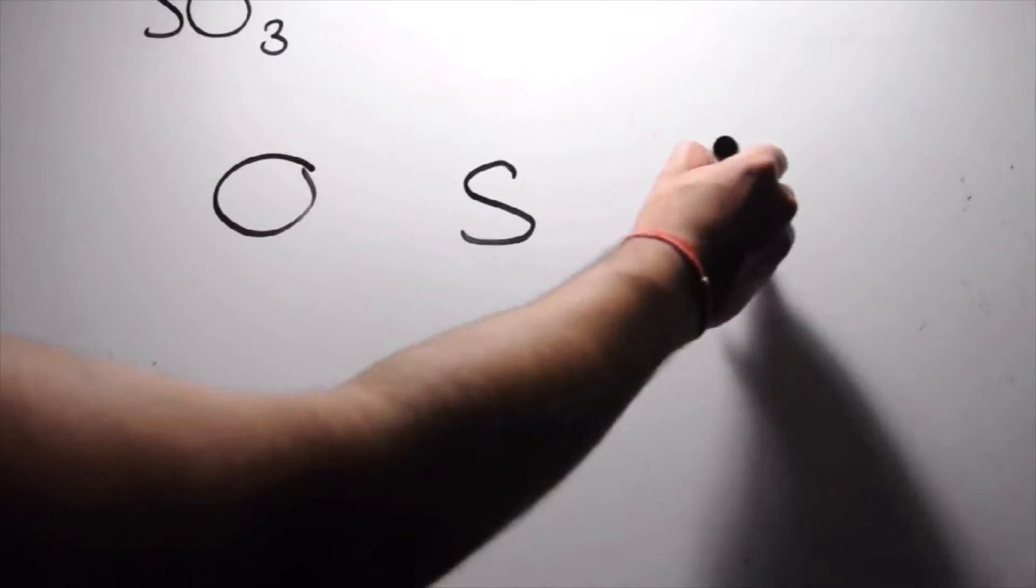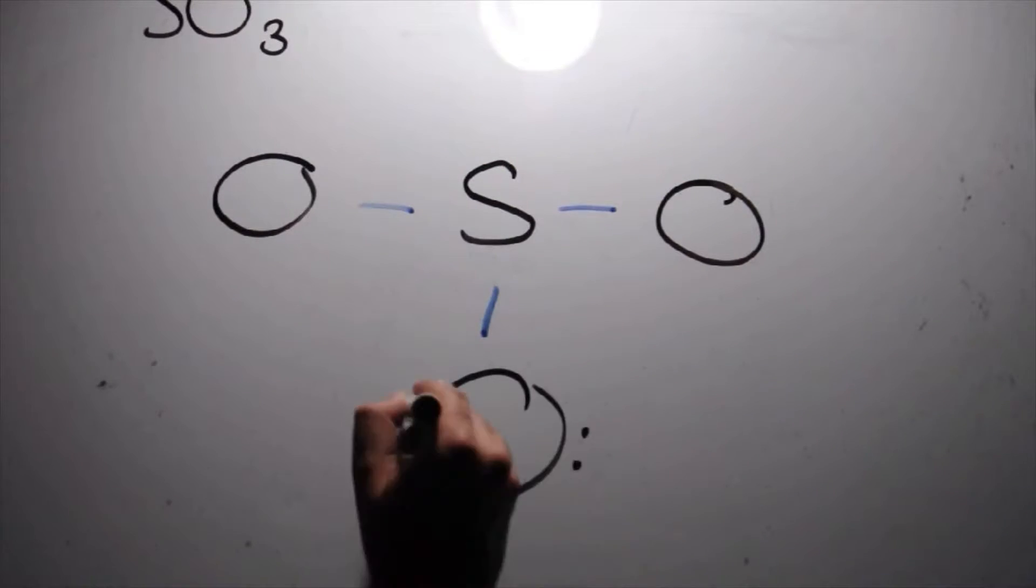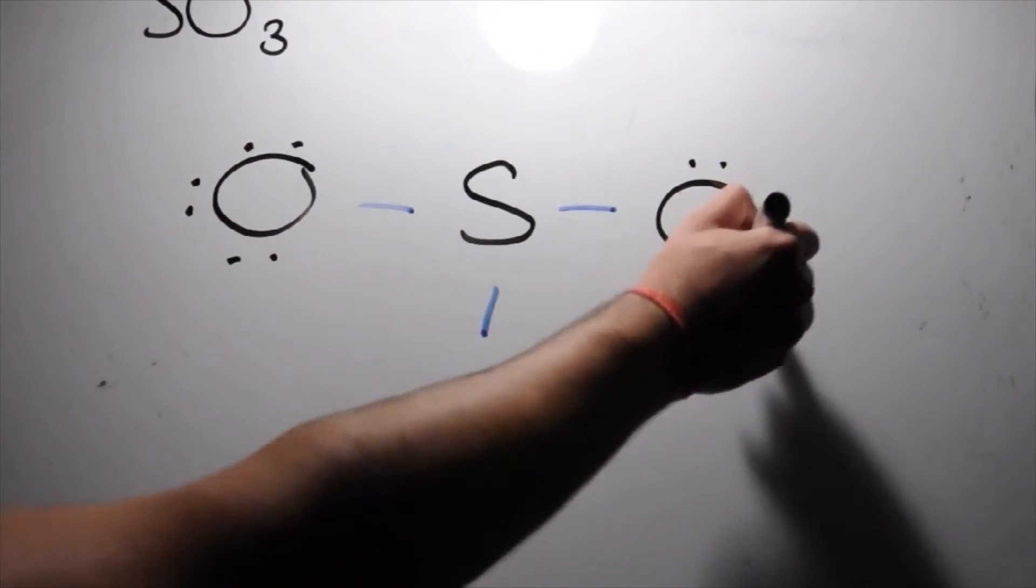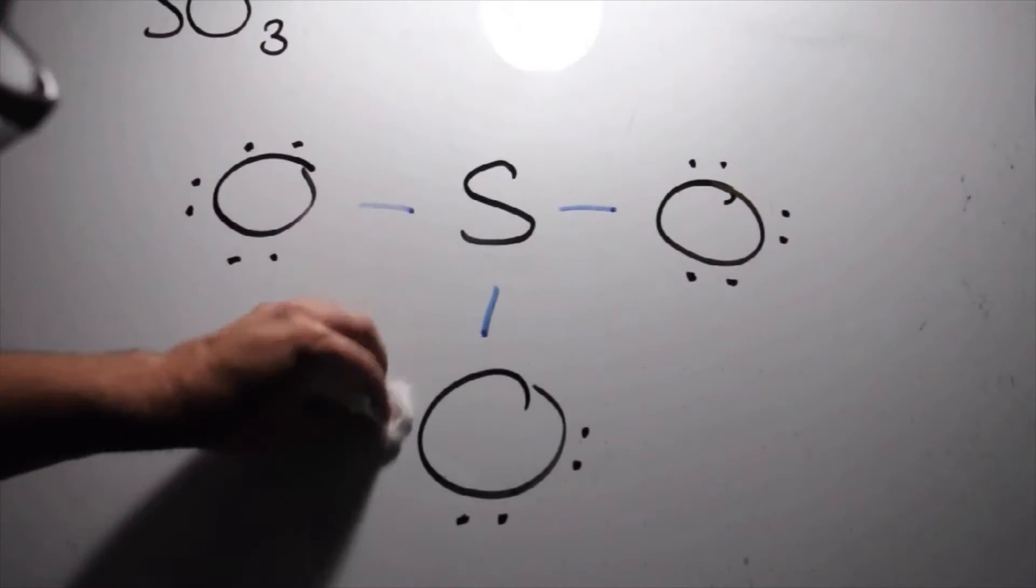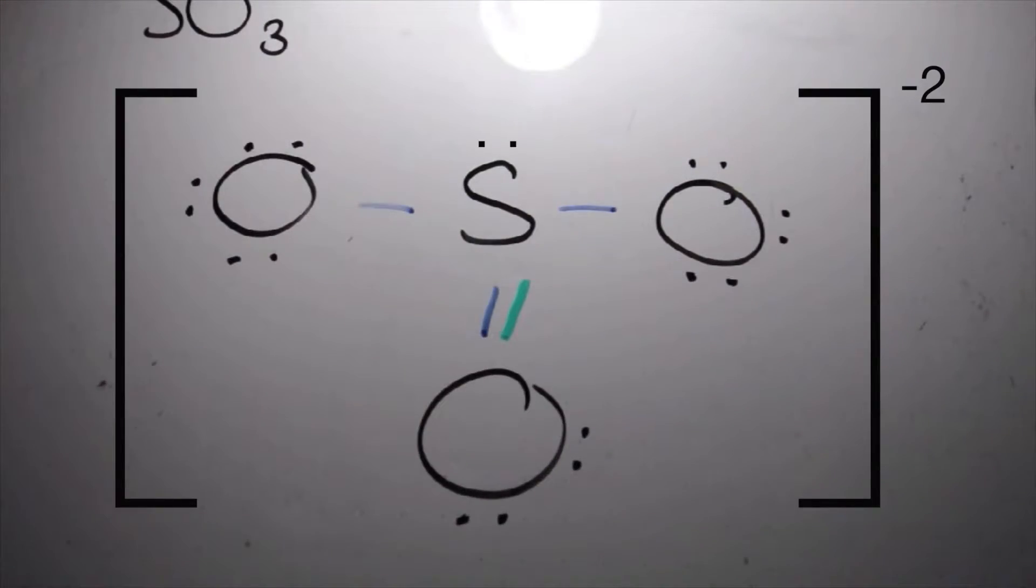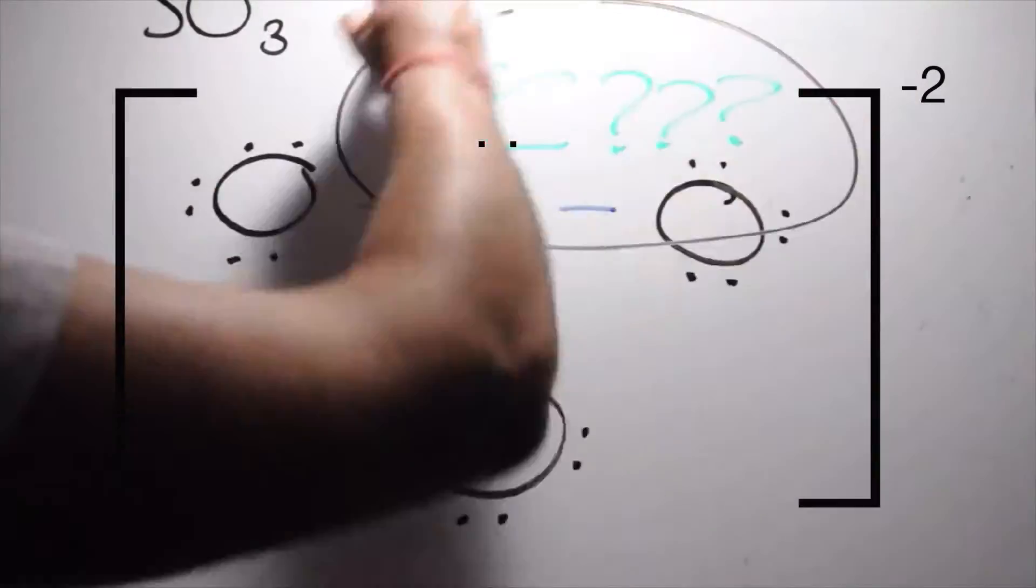Now let's take a look at the ion SO3 2- because it's a little special. After identifying that sulfur is the center atom, we're going to place three oxygens around it. Finally, we complete the octet around sulfur. Looking at this diagram, we have used all 26 valence electrons as well. However, there's a problem with this structure, and that's the formal charge.